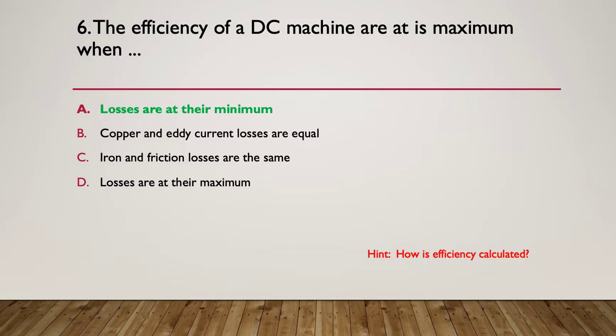So the answer here is when losses are at their minimum. When we've got the minimum amount of losses, we've got the maximum amount of efficiency happening. Even though copper and eddy current losses may be equal, there are other losses to consider. Iron and friction losses, again, they've got to be considered. Or losses are at their maximum? No, losses are at their maximum when it's at its most inefficient. But when this machine is at its maximum efficiency, the losses logically must be at their minimum.